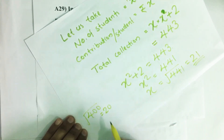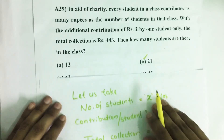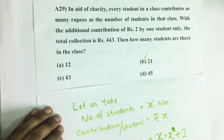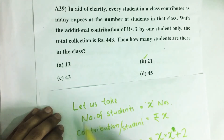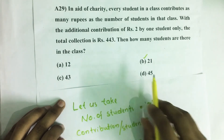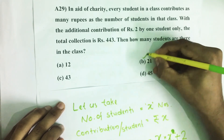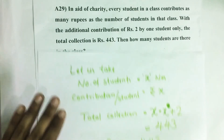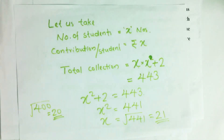Looking at the options, 43 and 45 are around double 20, so those are not near 20. Our answer is option B: 21. If you have any suggestions, please do comment. Don't forget to like, share, and subscribe to our channel. Keep supporting and loving us. Jai Hind!